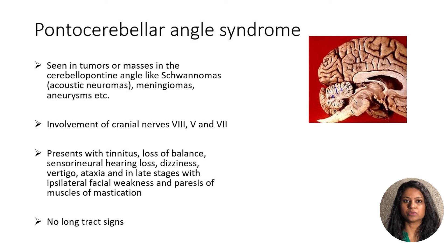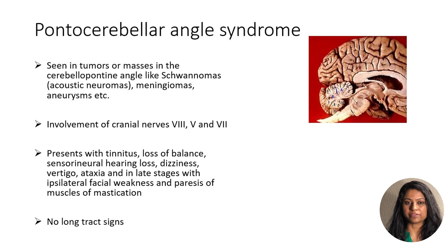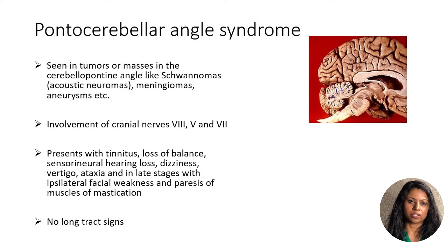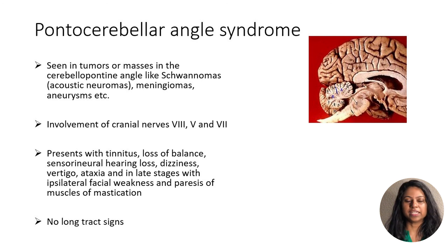Pontocerebellar angle syndrome is due to tumors or masses growing in the cerebellopontine angle, like schwannomas, meningiomas, or aneurysms, which involve cranial nerves 5, 7, and 8. Classically, cranial nerve 8 is involved first with tinnitus, sensorineural hearing loss, dizziness, and loss of balance presenting first. Later on, there is ipsilateral facial muscle weakness and involvement of muscles of mastication. There are no long tract signs. Thanks for watching. Hope this video helped to clarify your concepts on localizing the level of strokes.